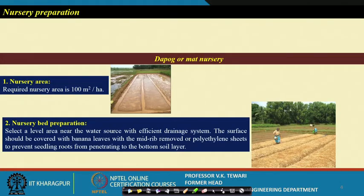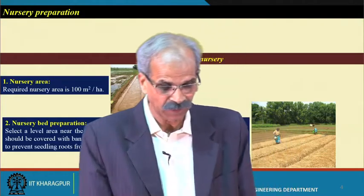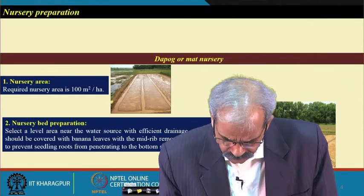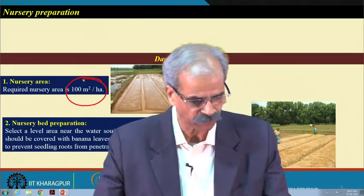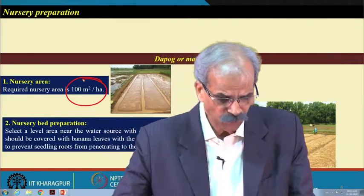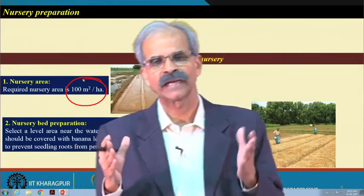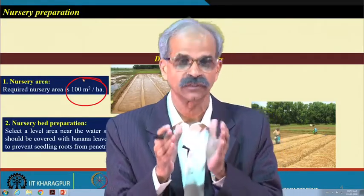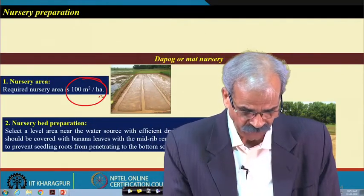Nursery preparation is very important. How do you prepare the nursery? For nursery bed preparation, about 100 square meters is required for one hectare. These are thumb rules: if you have to sow 1 hectare of area with paddy, approximately 100 square meters of nursery bed area is needed for preparing the seedlings.